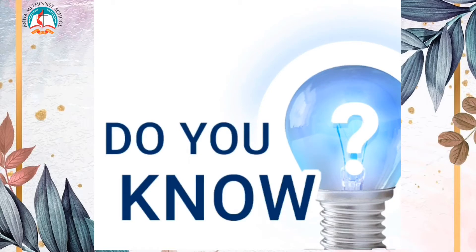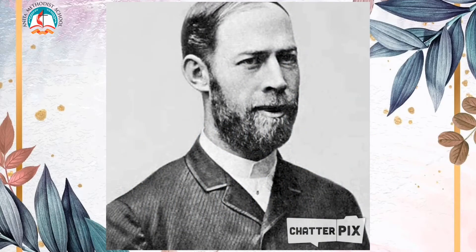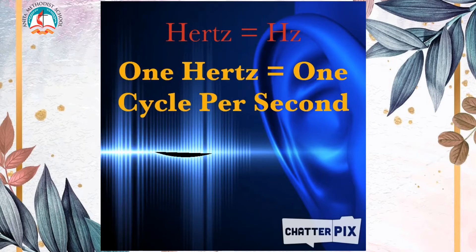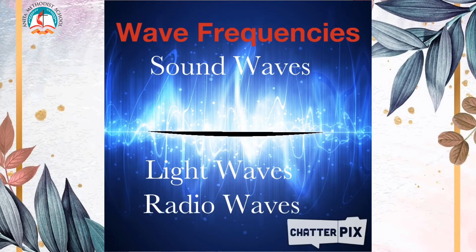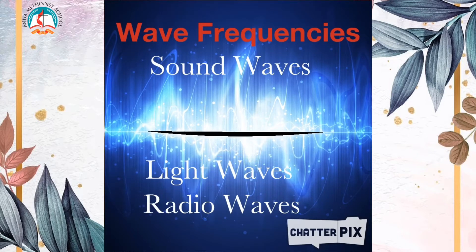Do you know about hertz? I am Heinrich Hertz — hertz is named after my name. I am an early pioneer in electromagnetic research and the first person to demonstrate the transmission of electromagnetic waves through space. Hertz, abbreviated as Hz, is the standard unit of measurement used for measuring frequency. Since frequency is measured in cycles per second, one hertz equals one cycle per second. Hertz is commonly used to measure wave frequencies such as sound waves, light waves, and radio waves. The average human ear can detect sound waves between 20 and 20,000 hertz. Sound waves close to 20 hertz have a low pitch; sound waves above 5,000 hertz have a high pitch.